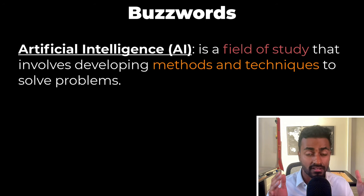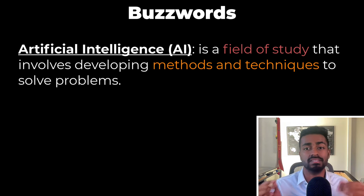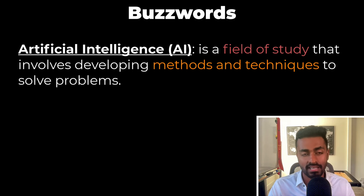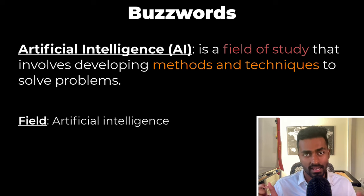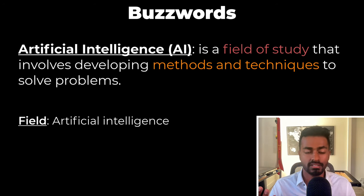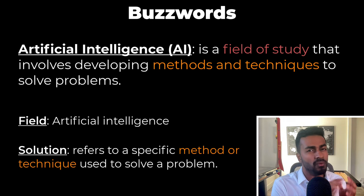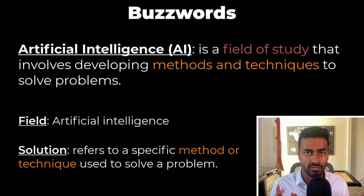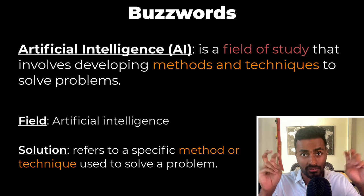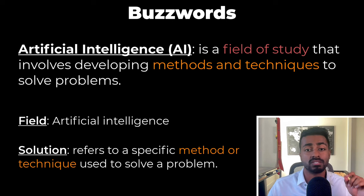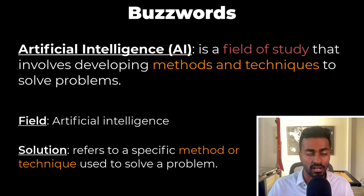Let's start with our first buzzword: artificial intelligence. Artificial intelligence is a field of study that involves developing methods and techniques to solve problems. The field of study is AI, artificial intelligence. One important term that we also want to describe here is that of a solution, or in this case, an AI solution. An AI solution refers to a specific method or technology that is applied to solve a problem.